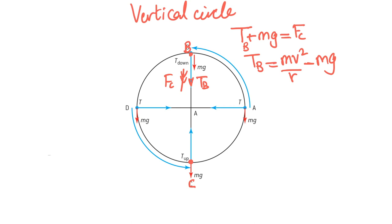Let's go to point C and discuss what happens here. At point C you can see that the weight is acting downwards and the tension T_C is acting upwards. What is the direction of the centripetal force? It is upward — towards the center. Now centripetal force is the resultant force. If the resultant force is upward then T_C has to be larger than W. If W were greater than T_C then the centripetal force would be acting downwards — that's not true. So T_C must be greater than W. And since they are acting in opposite directions, you subtract them.